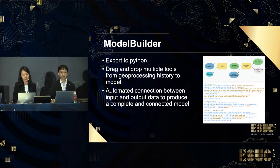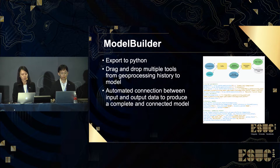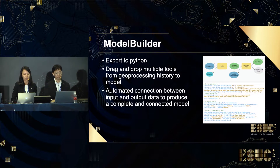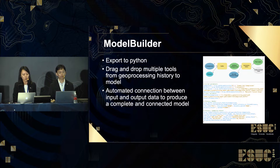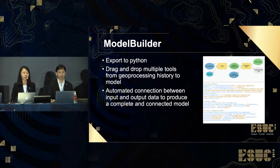ArcGIS Model Builder is a visual programming aid to create geoprocessing models to map out and automate your GIS workflows. In this ArcGIS Pro update, you can now export the model created on ArcGIS Pro to Python directly. Geoprocessing tools run on the geoprocessing pane are added to the project's geoprocessing history. The tools listed in the history can be added to a model by dragging and dropping them into an open model, and the tool will also be able to pass through inputs and outputs of all existing and incoming elements and automatically create connections to the correct elements according to the rules.